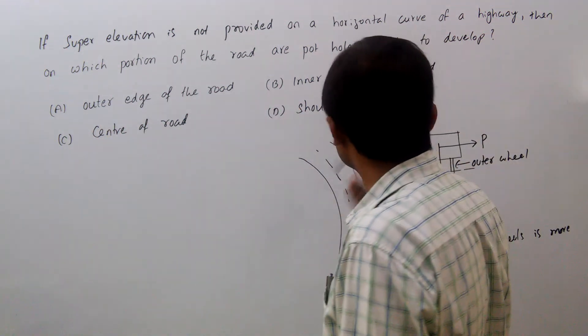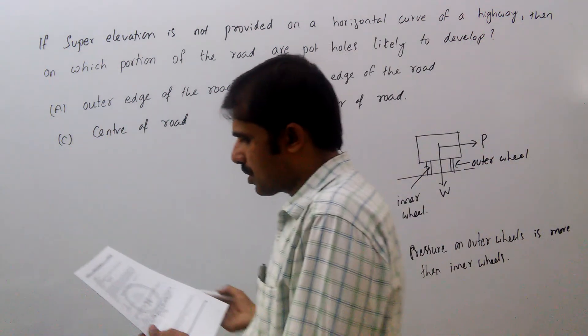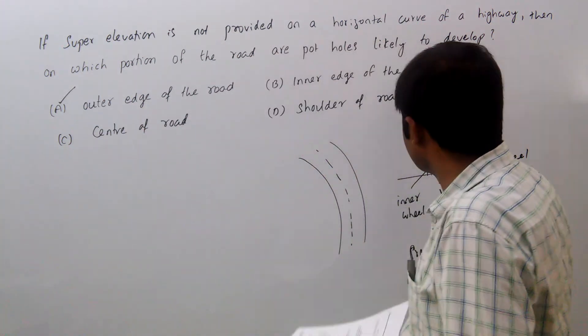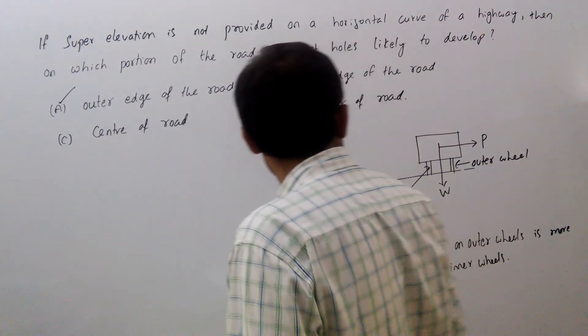Due to the high pressure, A is the correct one. Outer edge of the road is likely to develop pot holes. So this is the reason.